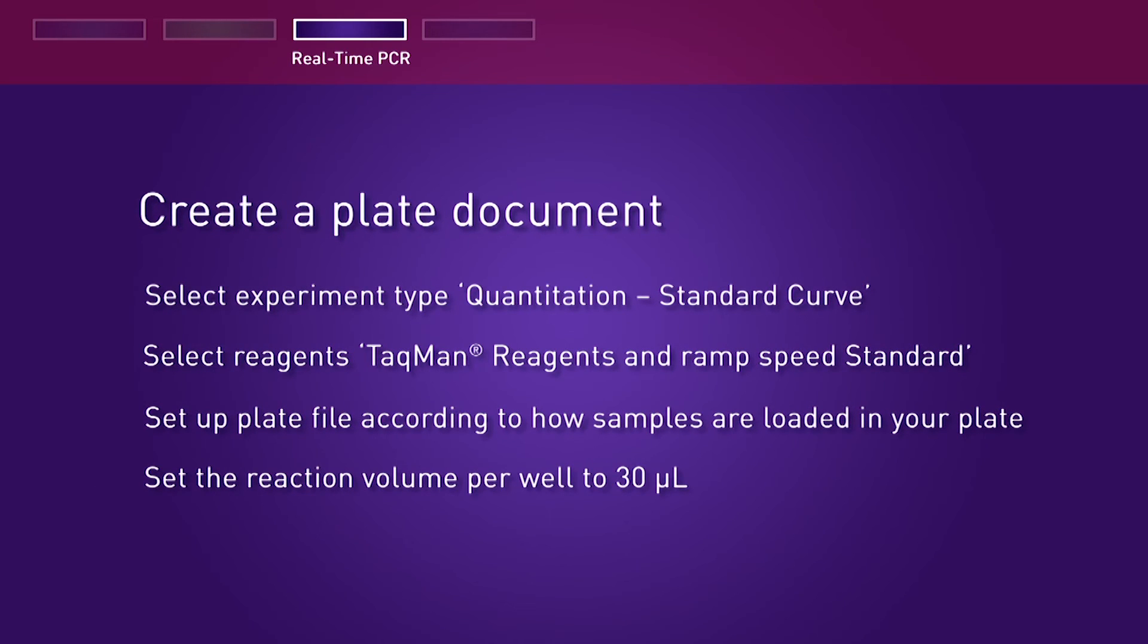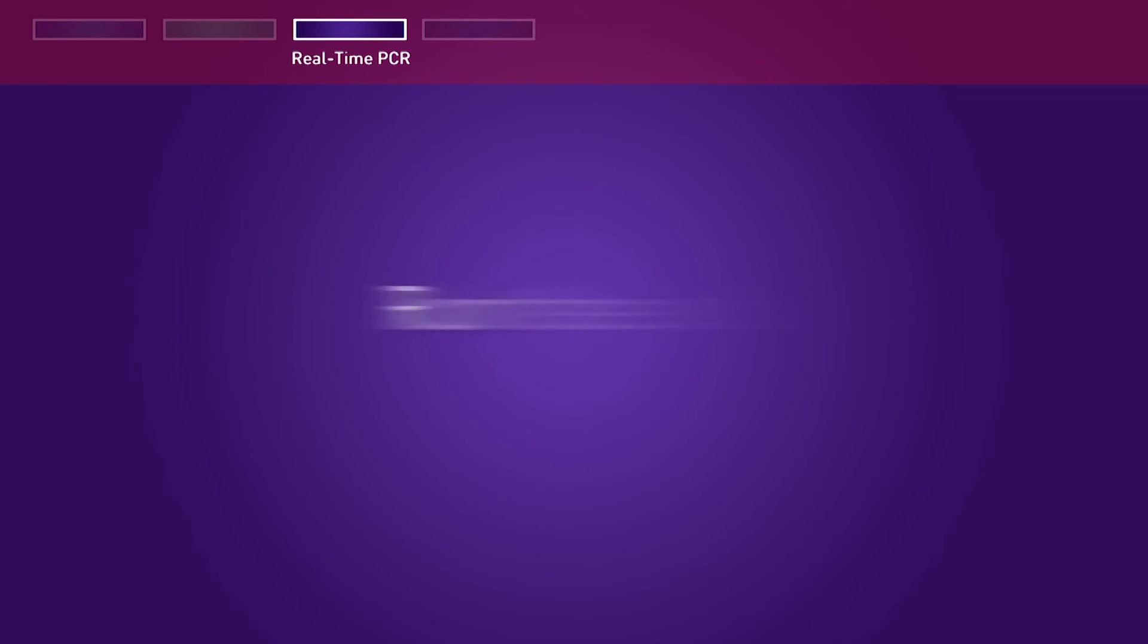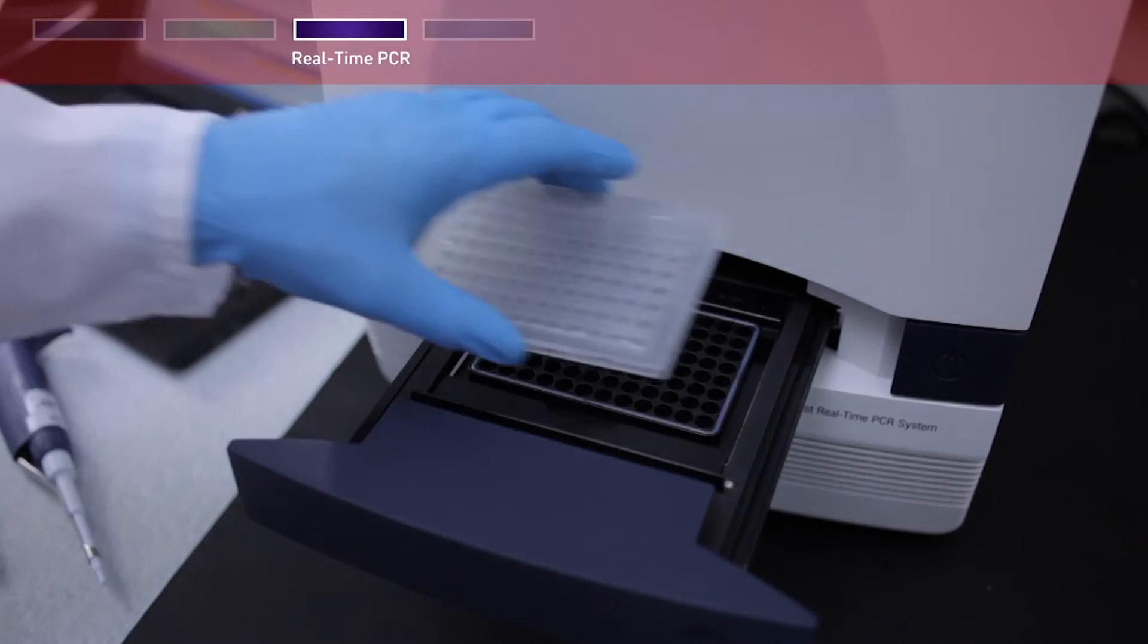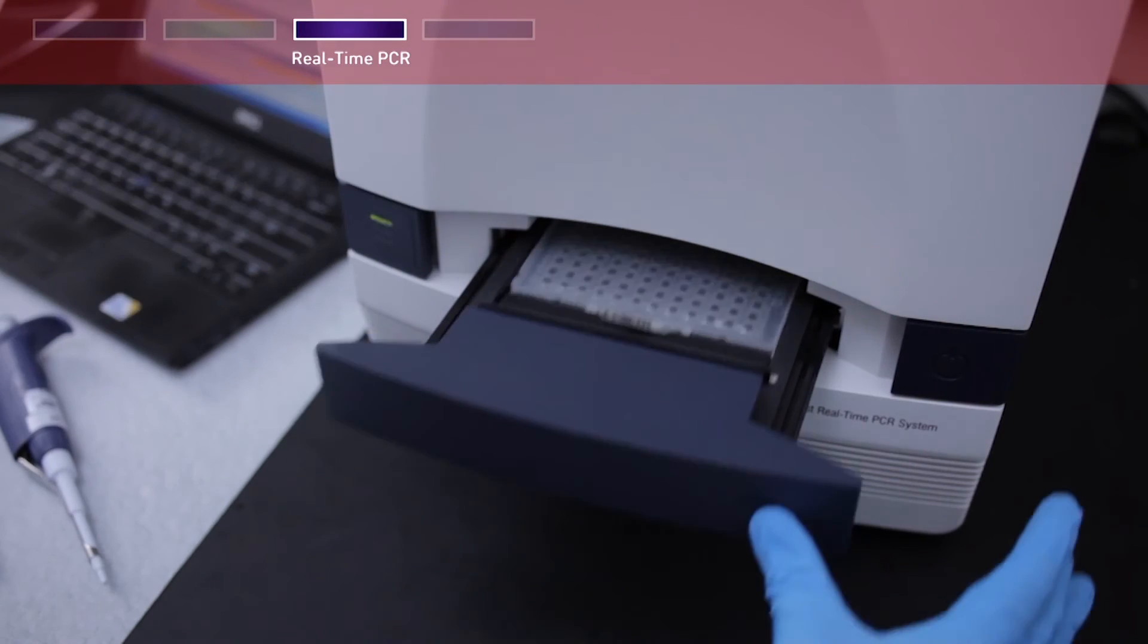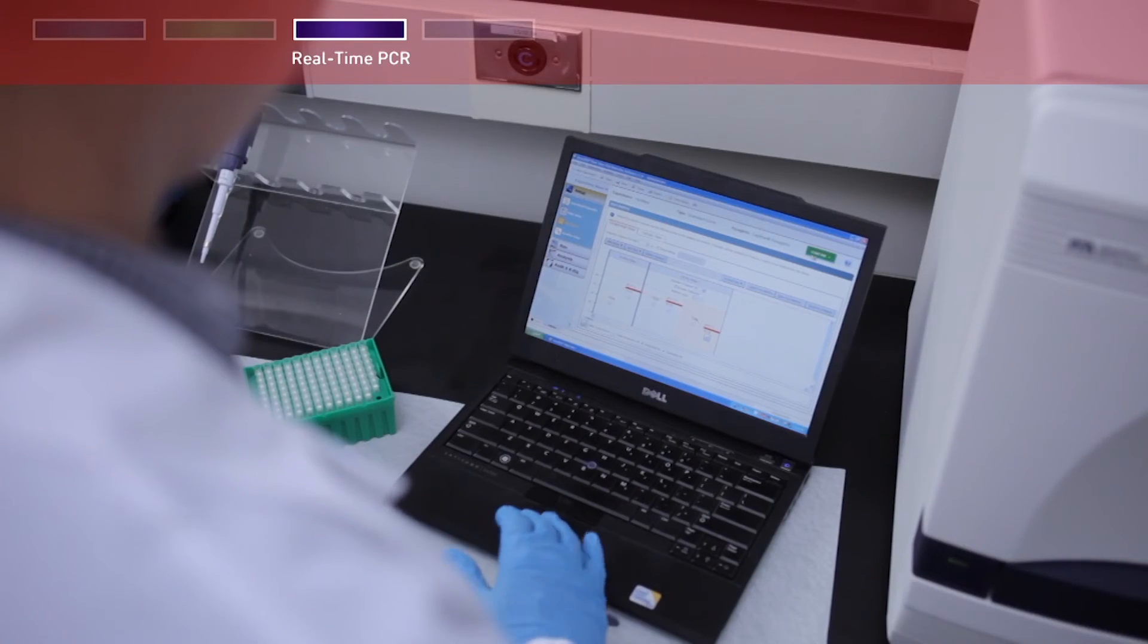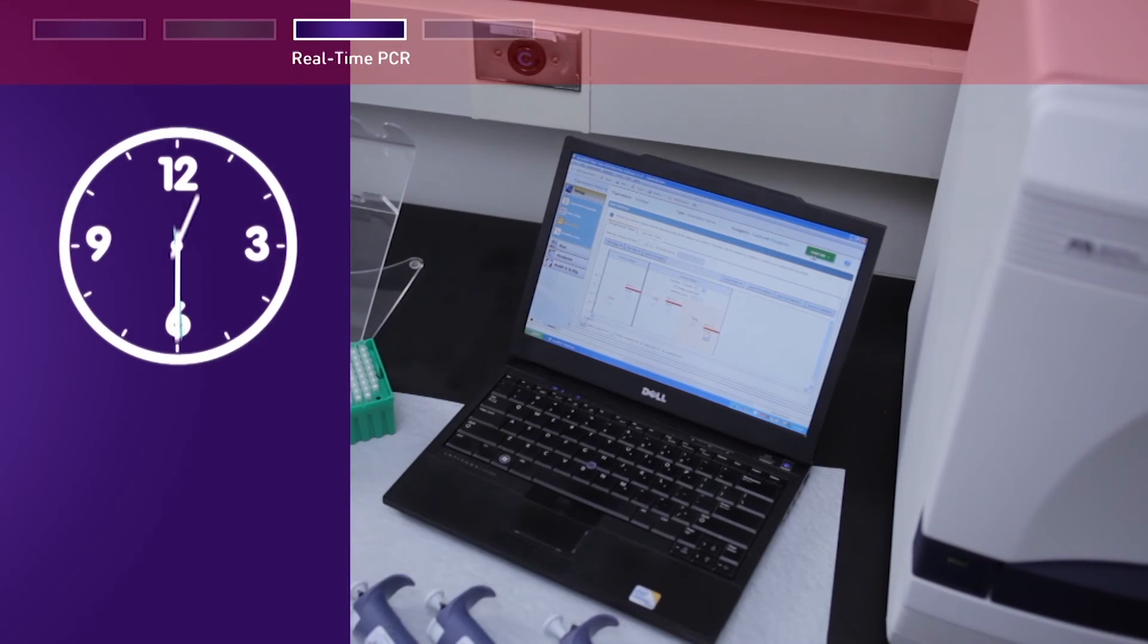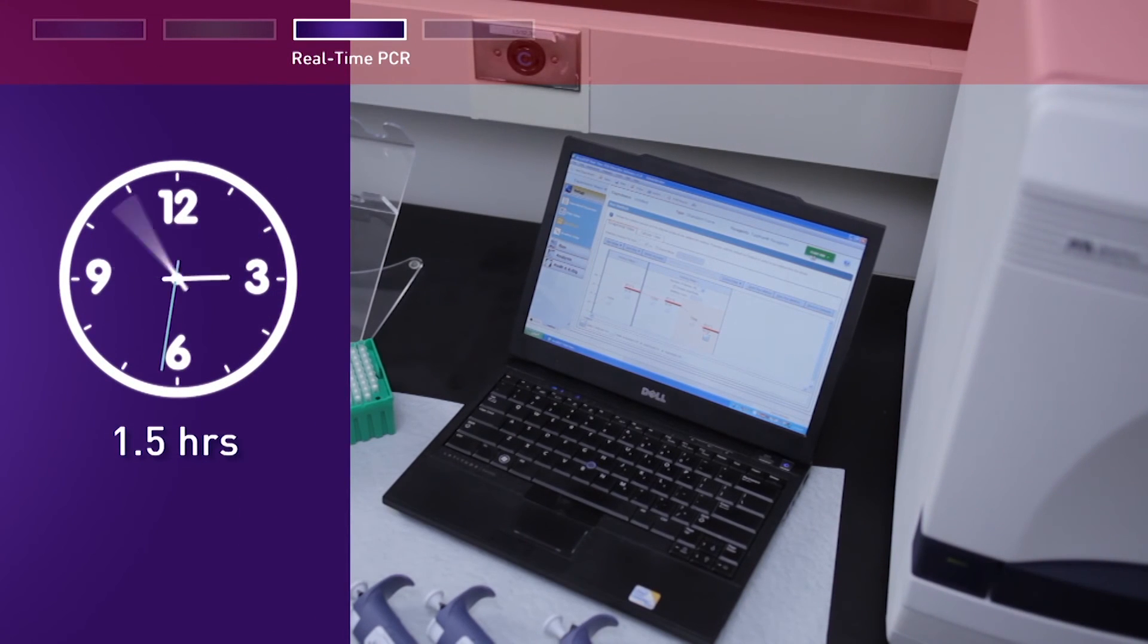Set the reaction volume per well to 30 microliters. Load the plate into the instrument and click Start Run. A residual DNA run is approximately 1.5 hours.